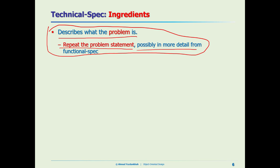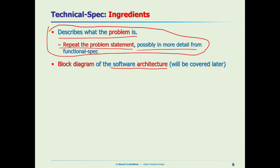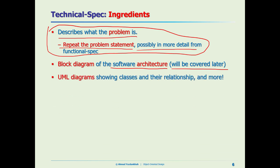Also it contains a block diagram about the software architecture. The whole software has a skeleton — it has an architecture — and we need to design that first. We will talk about it in detail later. Also it contains UML diagrams, which show the classes and their relationships, and more that we will see later.